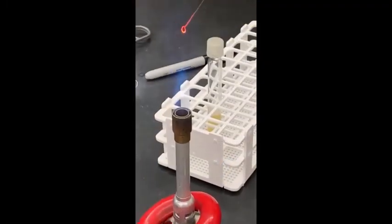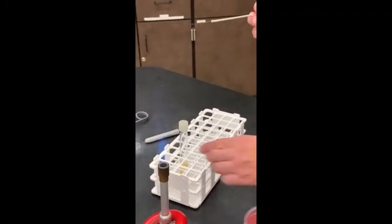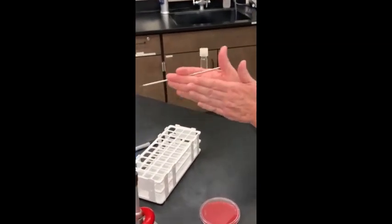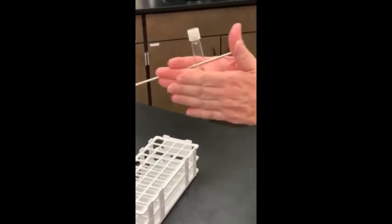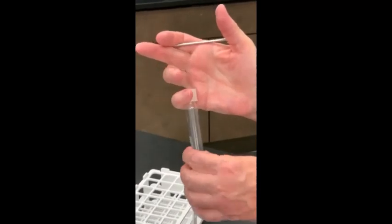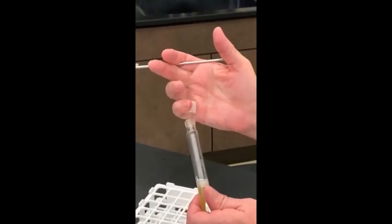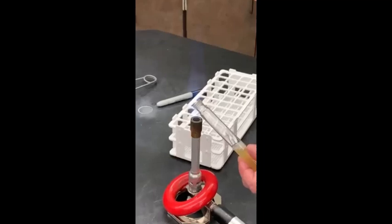If you're working from a broth culture, first you'll agitate the broth to suspend the bacteria. Then, sterilize your inoculating loop and aseptically transfer two to three loops full of bacteria to a clean slide.